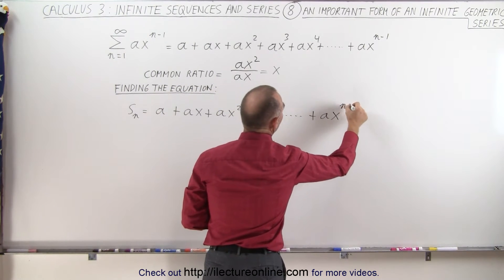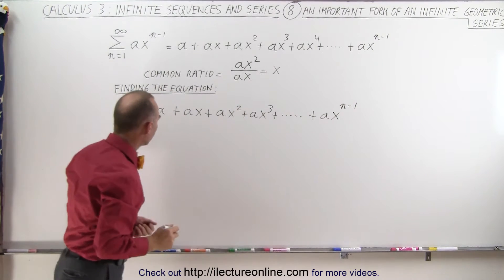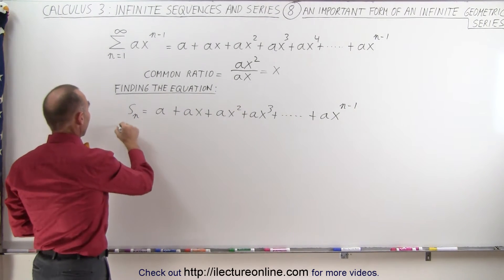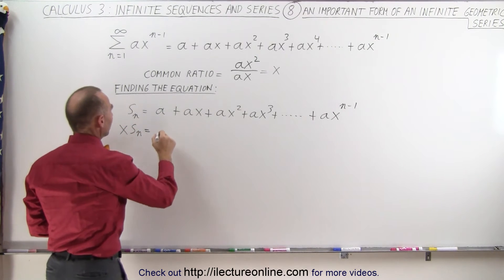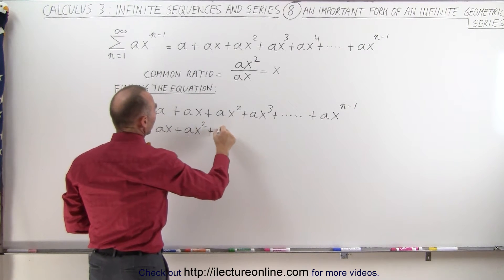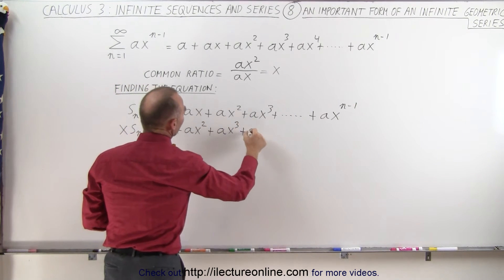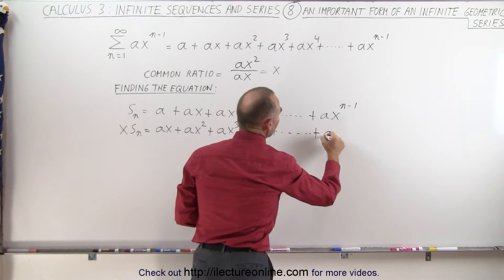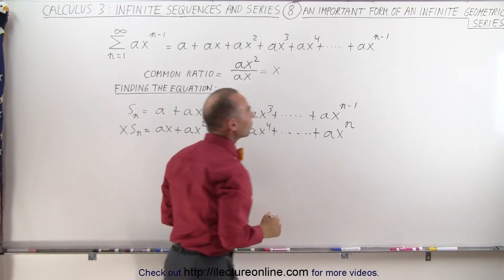We get a plus ax plus ax squared plus ax cubed plus all the way up to ax to the n minus 1 power. Now we're going to take the whole series and multiply times x, x times s sub n, so this becomes ax plus ax squared plus ax cubed plus ax to the fourth power, and the last term would be a times x to the n power.